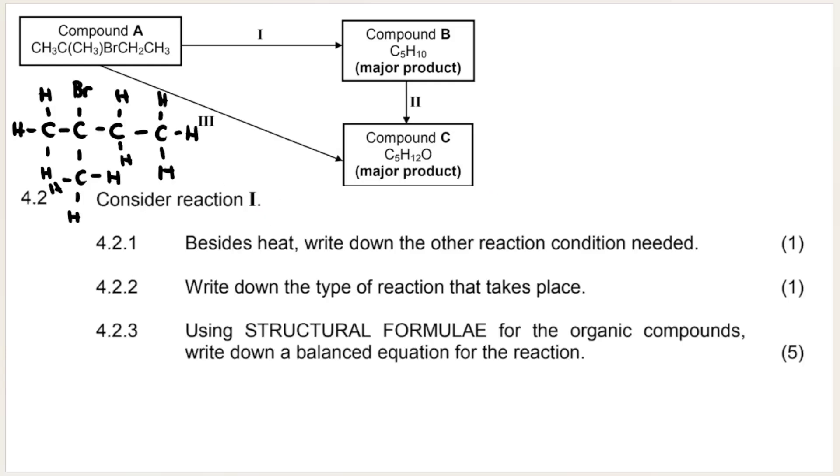4.2 says, consider reaction number one. Besides heat, write down the other reaction condition needed. Now, first of all, we need to think about what could possibly be happening in reaction number one. I just left compound A over here, drawn out in its structural formula. Then something happened and I've got compound B. Now take note, how many carbons does compound B have? It'll still have five carbons because when something goes through an addition, elimination, or substitution reaction, the amount of carbons does not change, unless we're talking about cracking. We've got C5H10.